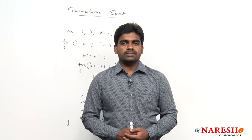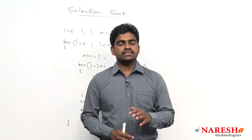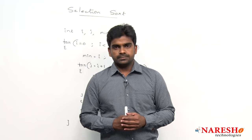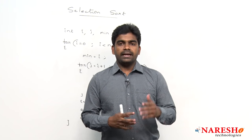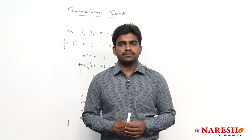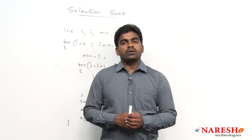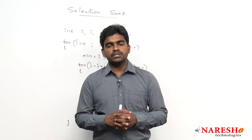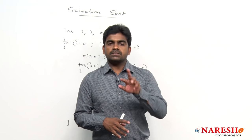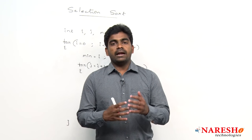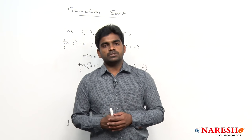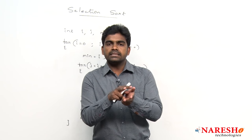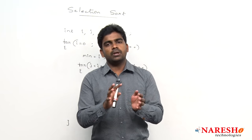Hi everyone, welcome to Nourish Technologies, this is Srinivas. In this session I am going to explain how to perform sorting operation on an array. The sorting algorithm we are going to discuss is selection sort. We already discussed bubble sort algorithm in the last video. Bubble sort works by comparing adjacent elements and swapping them if required. Selection sort works by finding the minimum element and swapping it with the index element.